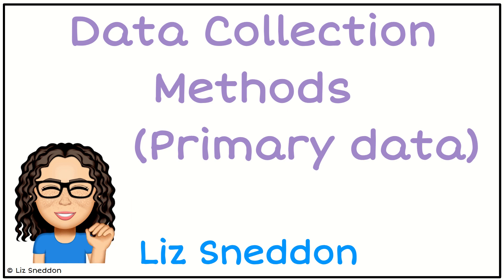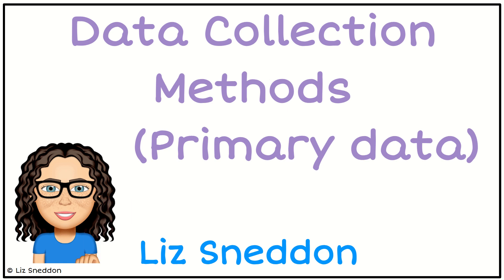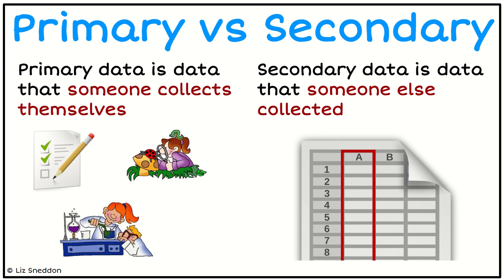Hi, it's Liz Sneddon. Let's have a look at some data collection methods when we're talking about primary data. So the first thing we want to clarify is what the difference between primary and secondary data is. Primary data is when you collect it yourself — you're the one that thinks about how you're going to collect it and you physically do the collecting yourself.